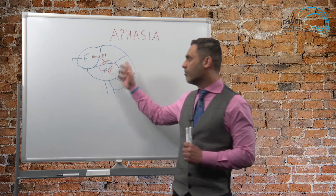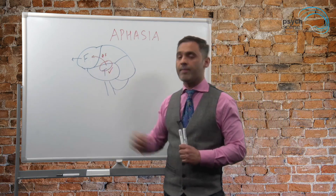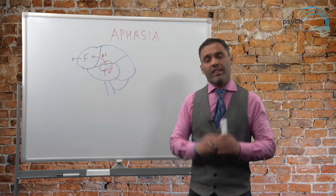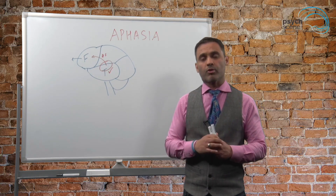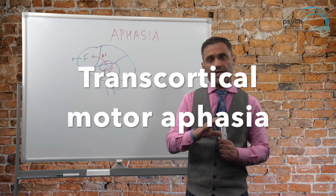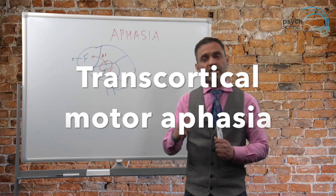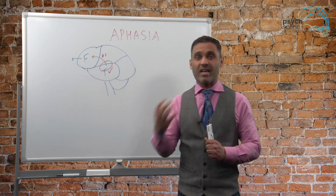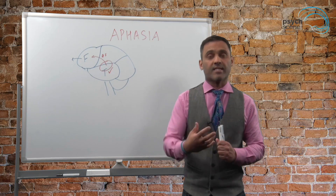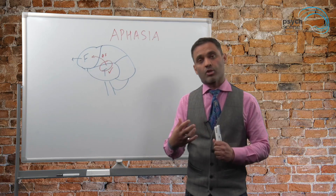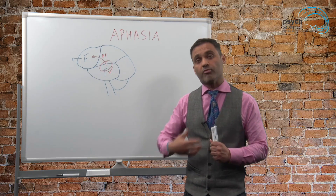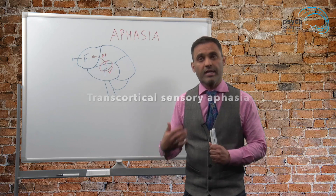In both Wernicke's aphasia and Broca's aphasia, repetition is affected. There are two other types of aphasia: transcortical motor and transcortical sensory. Transcortical motor is the same as Broca's aphasia but repetition is intact. Transcortical sensory is the same as Wernicke's aphasia, but repetition is intact.